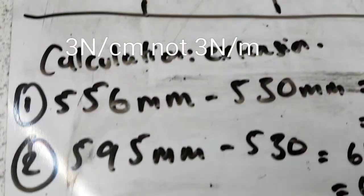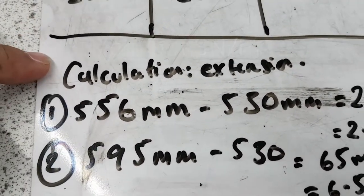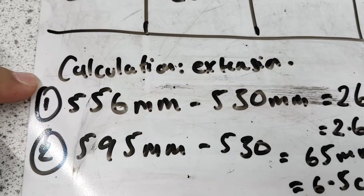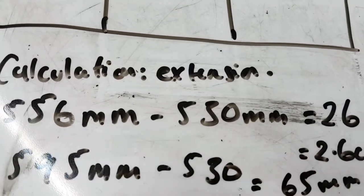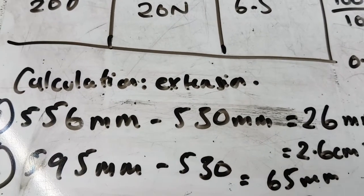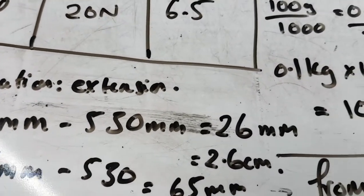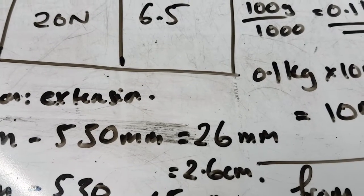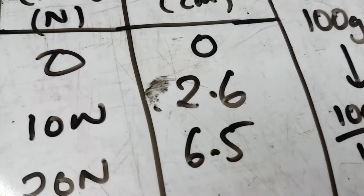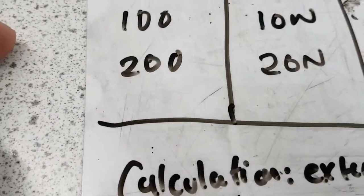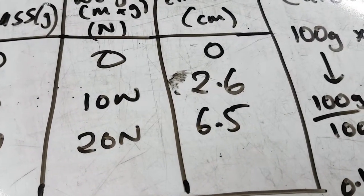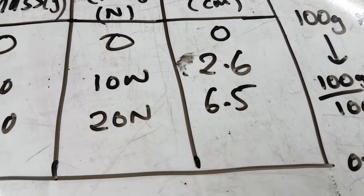Let me show you the calculations for that. My extension is how much it extended by. It went to 556 millimeters, but it started from 530 millimeters. So what's the difference between the two? It's 556 take away 530, which gives me 26 millimeters. If I divide it by 10, that'll give me 2.6 centimeters. Then I added another 100 grams to make it 20 newtons, and it extended by 6.5 centimeters.